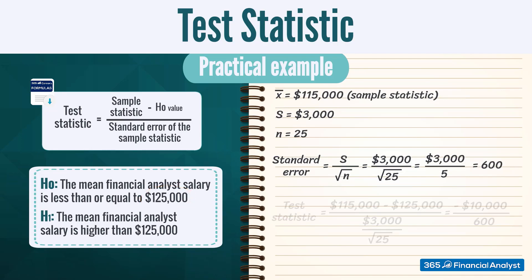Therefore, we would have the following test statistic. $115,000 minus $125,000 divided by 3,000 over the square root of 25. This gives us a test statistic equal to minus 16.6.